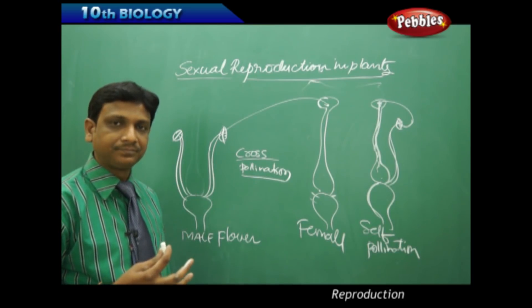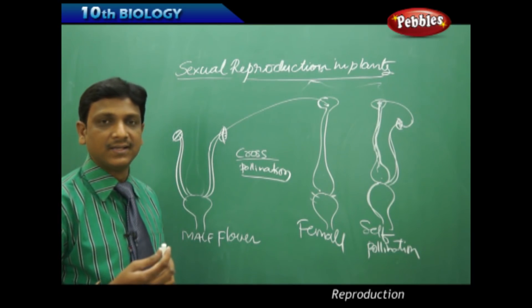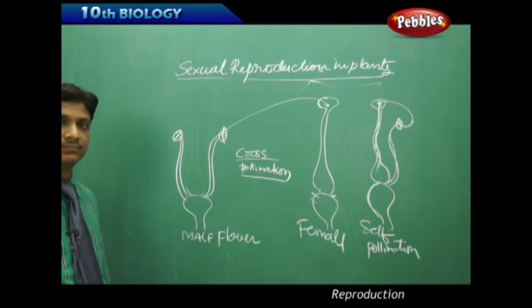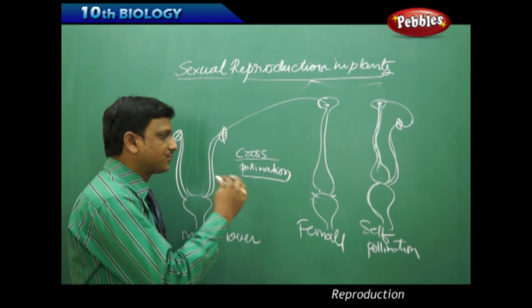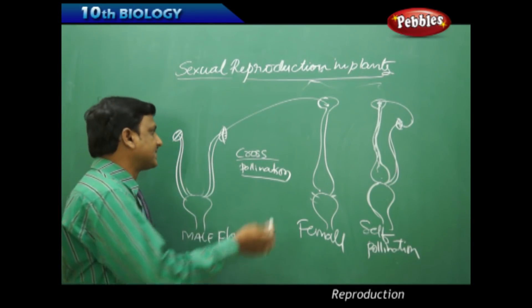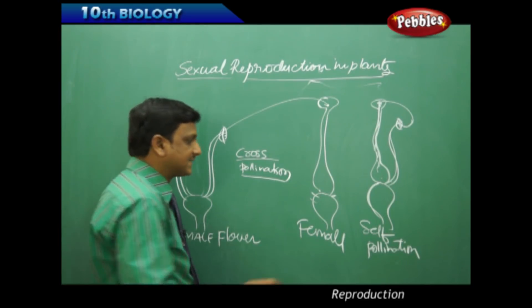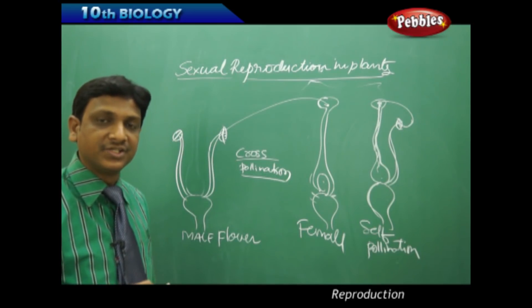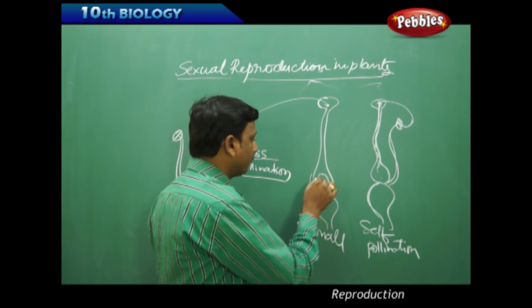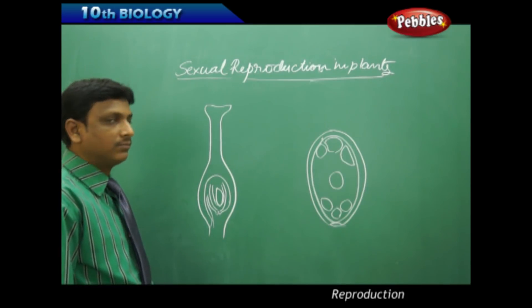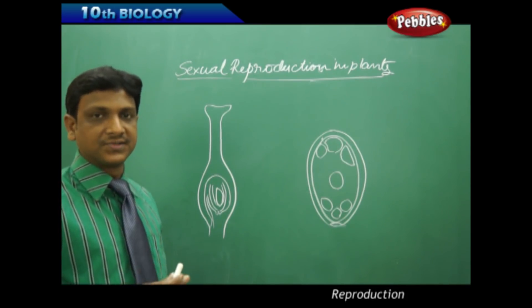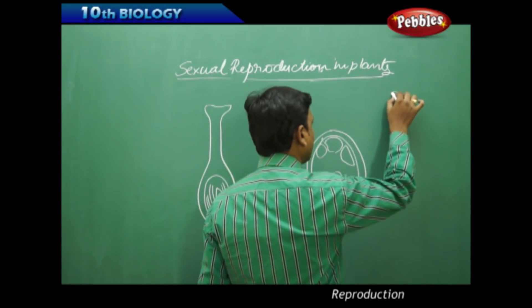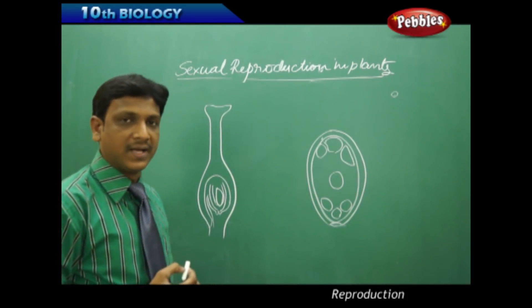Pollination is carried out by various agents like air and mostly by insects. The male reproductive organs of a plant consist of a stamen, anther, and pollen grains. The pollen grains are fine dust-like particles which we can observe under a microscope. Using a microscope, you can take the pollen dust from a plant like hibiscus — the yellow powder-like substance found on the anthers — put it in water on a slide, and observe it.